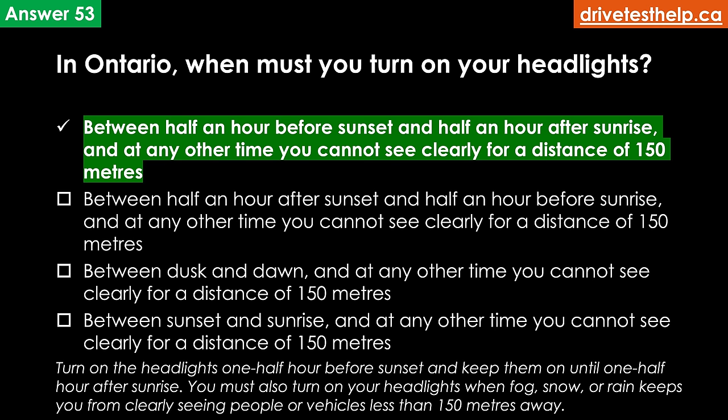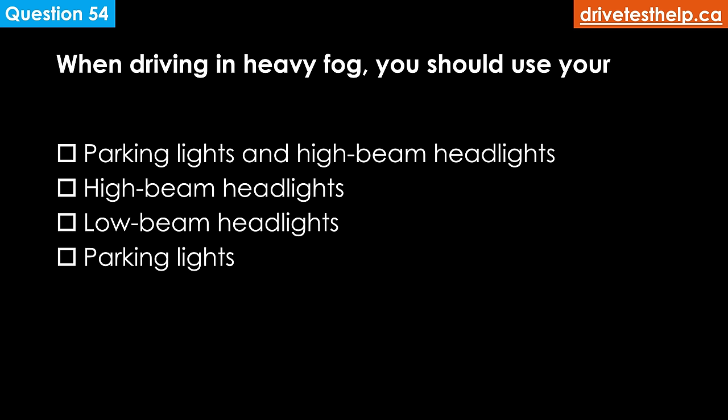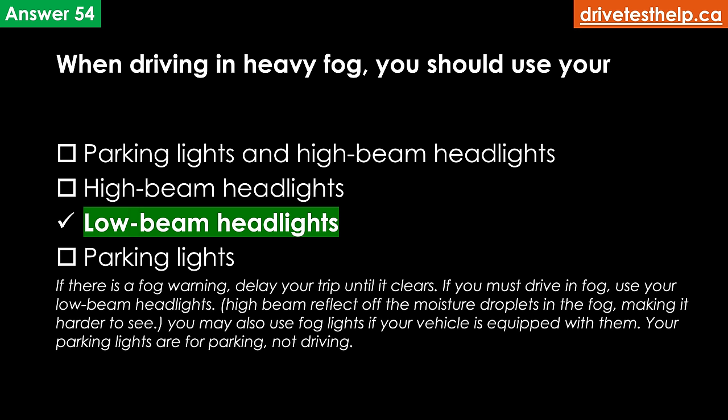You must turn your headlights on when fog, snow or rain keeps you from clearly seeing people or vehicles less than 150 meters away. When driving in heavy fog, which lights should you use? Options: parking lights and high beam headlights; high beam headlights; low beam headlights; parking lights. The correct answer is low beam headlights. If there is a fog warning, delay your trip if possible. If you must drive in fog, use your low beam headlights — high beams reflect off moisture droplets in the fog making it harder to see. You may also use fog lights if your vehicle is equipped with them. Parking lights are for parking, not driving.